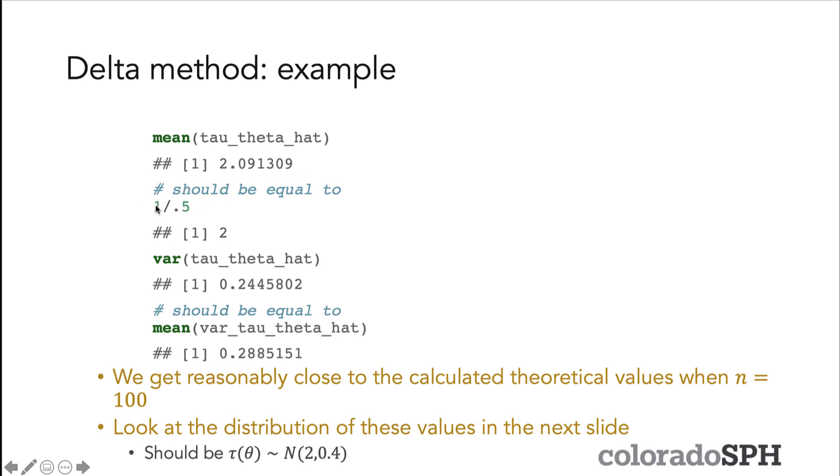That's pretty close—1 divided by 0.5 is equal to 2, and our calculated mean of 2.09 is pretty close to 2. Our variance, which we calculate using the delta method here, is 0.2445, and that should be roughly equal to the variance. The observed variance of that transformed estimator, which is 0.24 here, should be roughly equal to the variance we calculated using the delta method—it's 0.288. It's not too far, though it's a little bit farther than I'd like.